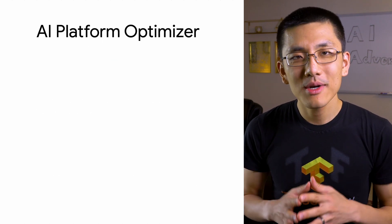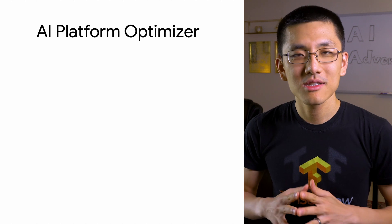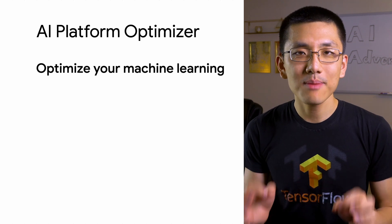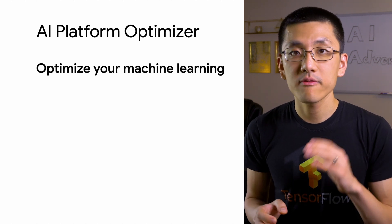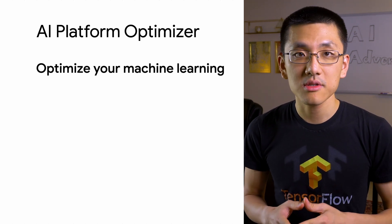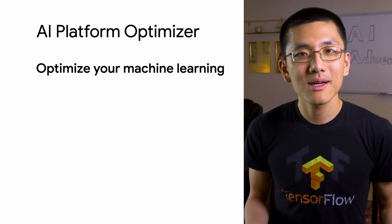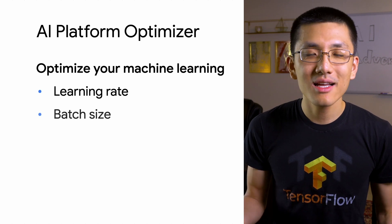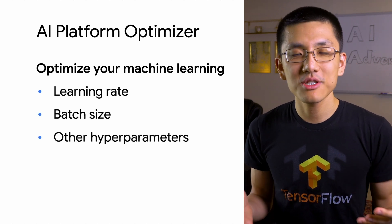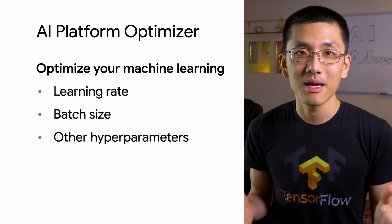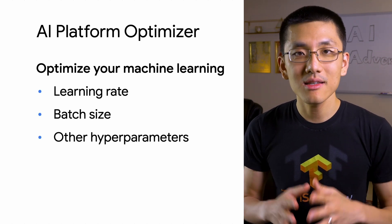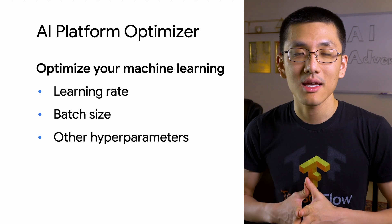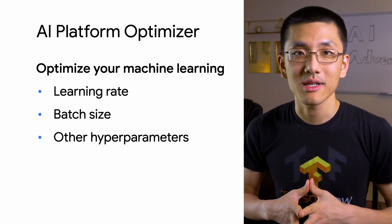AI Platform Optimizer was built to optimize hyperparameters of machine learning models, so you can optimize things like learning rate, batch size, and other typical machine learning hyperparameters. This is the most common use case for Optimizer today.